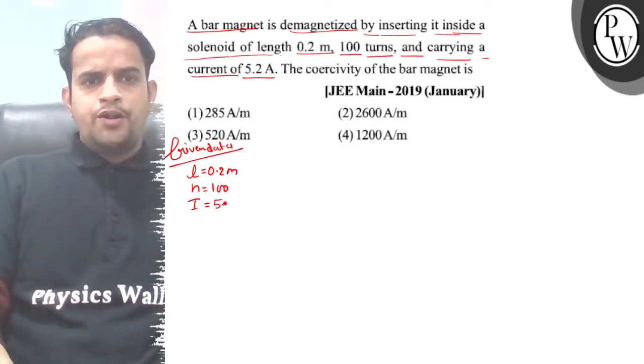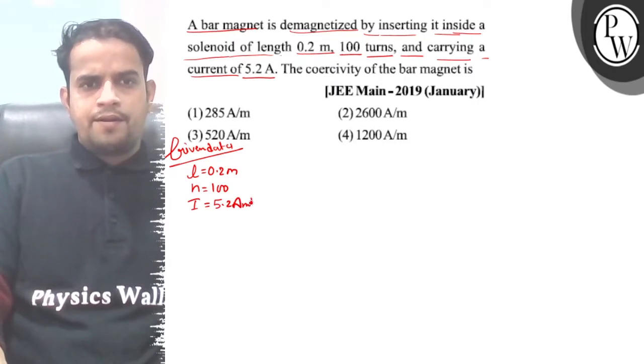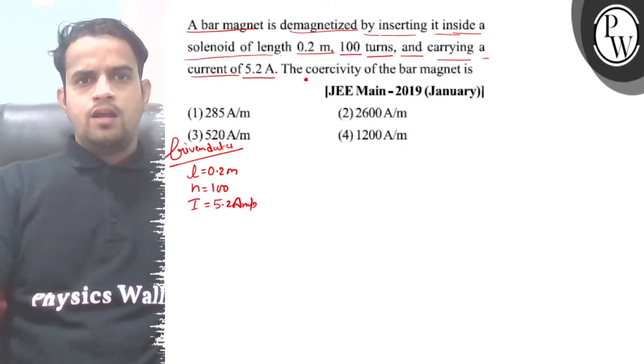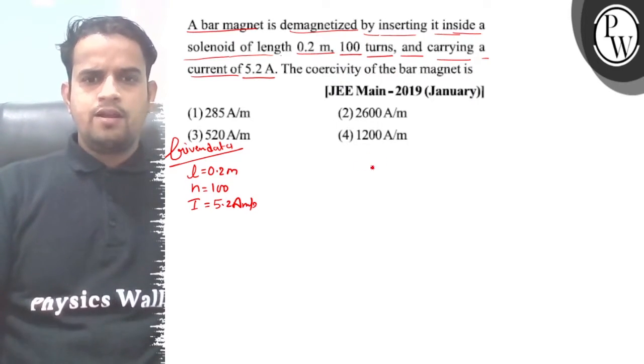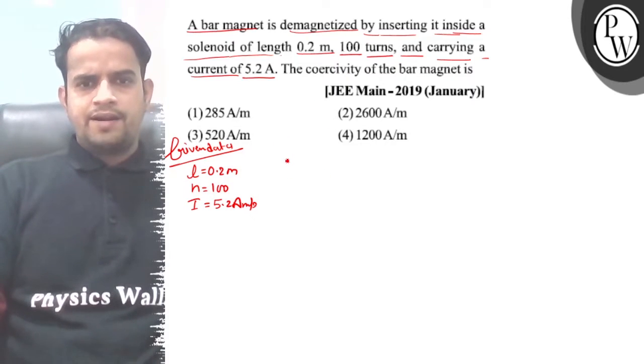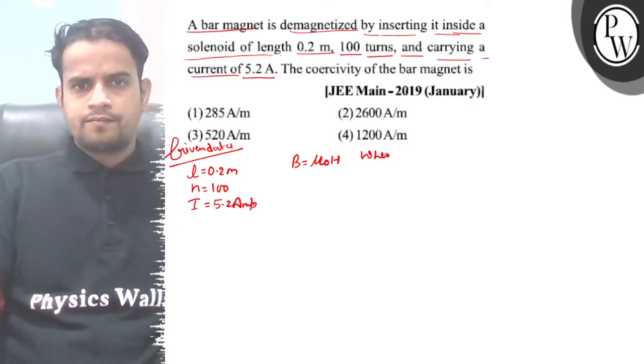The coercivity of the bar magnet is given by B equals μ₀H, where H equals the coercivity.